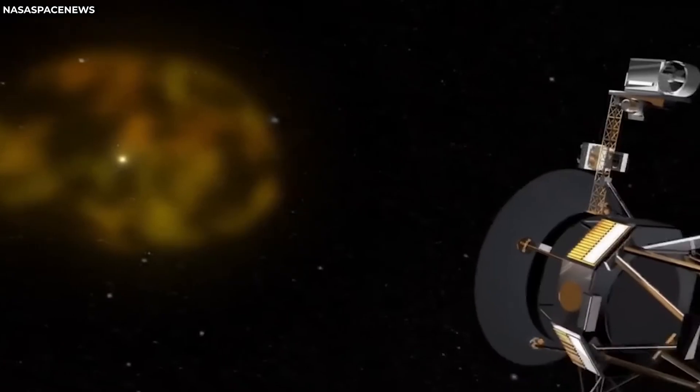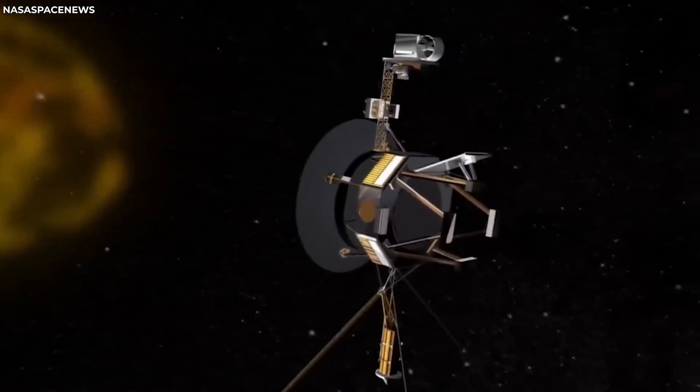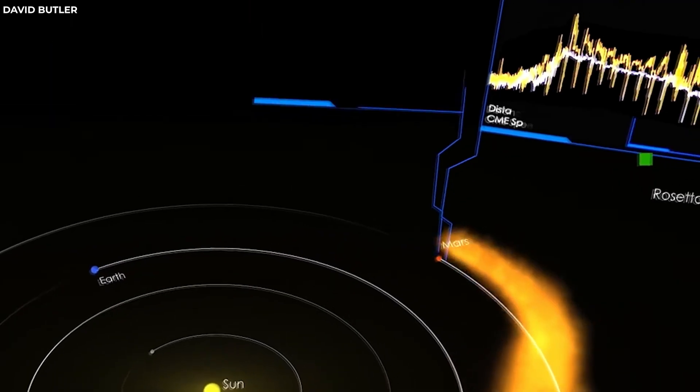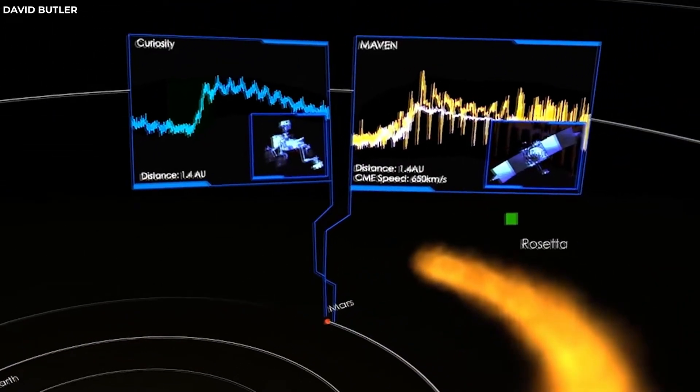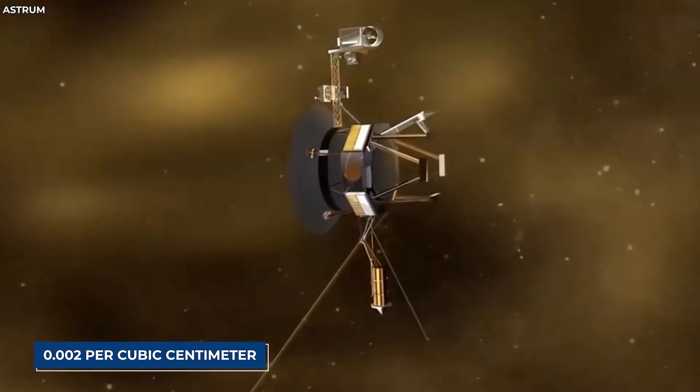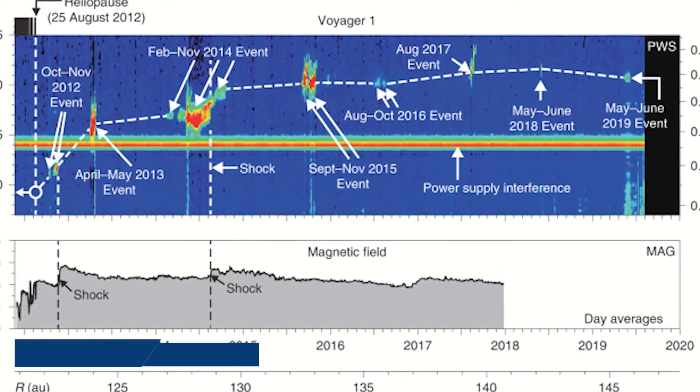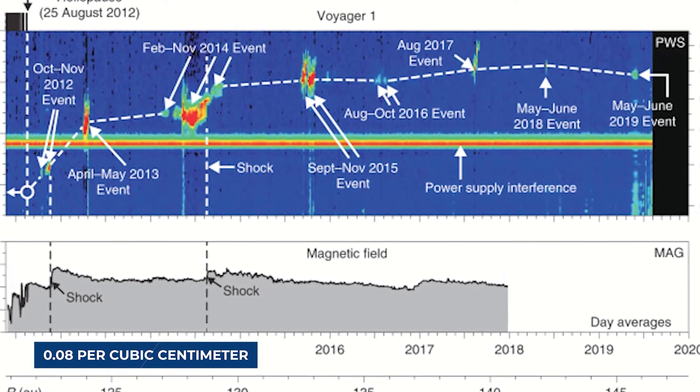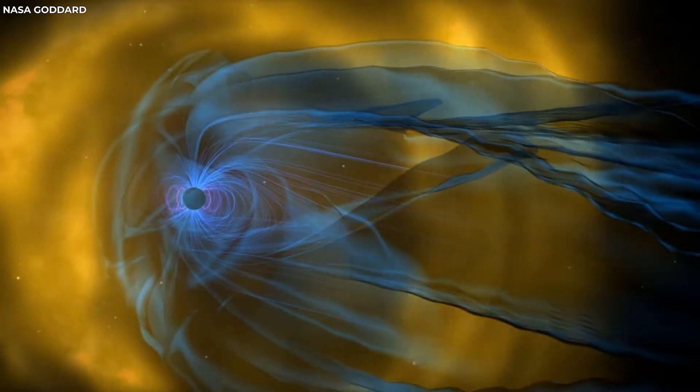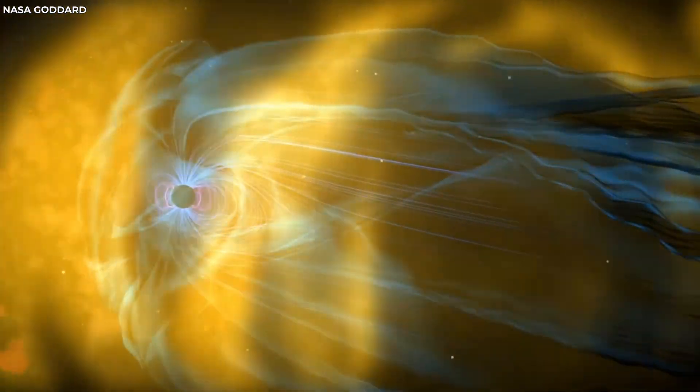On August 25, 2012, Voyager 1 recorded a sharp increase in plasma density, from about 0.002 per cubic centimeter to about 0.08 per cubic centimeter. This meant that Voyager 1 had crossed into a region where plasma was much denser than inside the heliosphere.